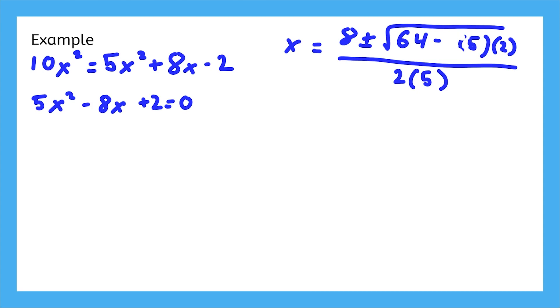Now let's simplify a little. Negative 4 times 5 is negative 20, times 2 makes negative 40. Inside the radical, 64 minus 40 leaves 24. Finally, in the denominator, 2 times 5 is 10.